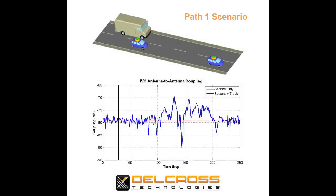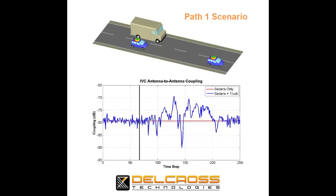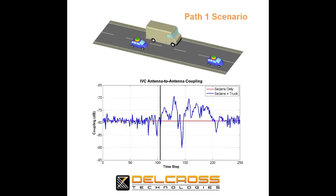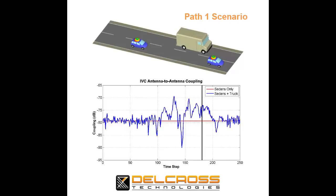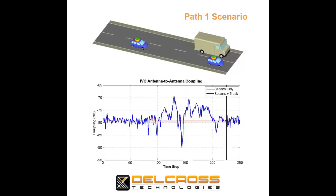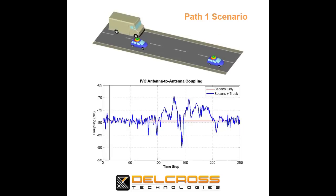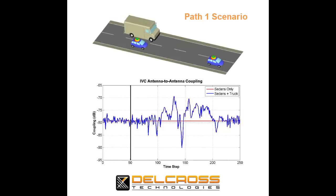Here's an animation of the results from a series of Savant simulations. In this scenario, we run the van through the environment, and the red curve on the display below shows us the antenna-to-antenna coupling for the two sedans alone on the roadway without the presence of the delivery van. The value is constant because the cars aren't moving relative to one another. The blue curve shows us the antenna coupling as the delivery van moves through the scene, with about 5 dB variability on the curve until the delivery van moves through a position about halfway between the sedans.